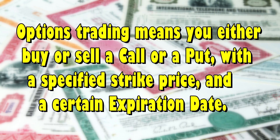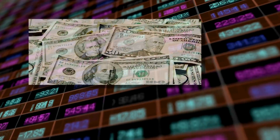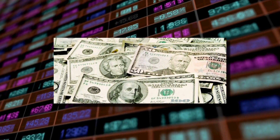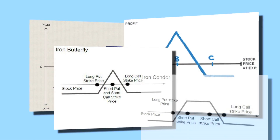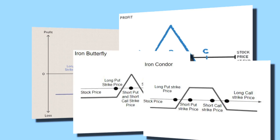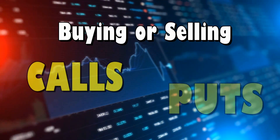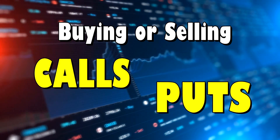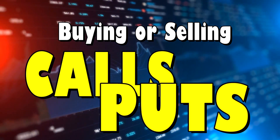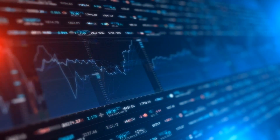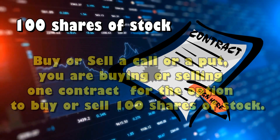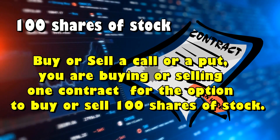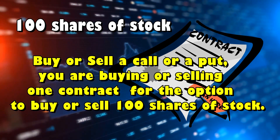If you understand this, you now know the basics of all options trading. There are option strategies that involve more than just simply buying or selling a call or a put — such as vertical spreads, three-legged spreads, butterflies, condors, or more. All of them involve buying or selling calls or puts. All option strategies are based on just these two choices: calls and puts. Options are also referred to as contracts, and each contract is for 100 shares of stock. When you buy or sell a call or a put, you are buying or selling one contract for the option to buy or sell 100 shares of stock.